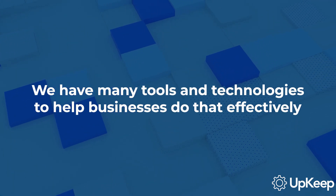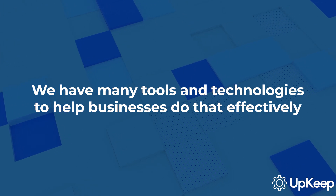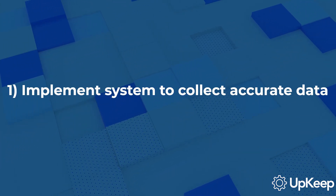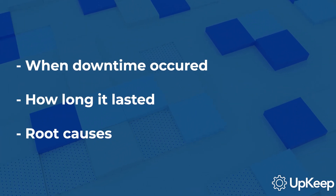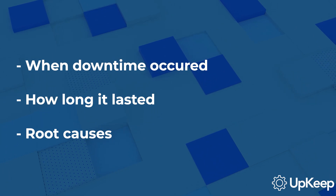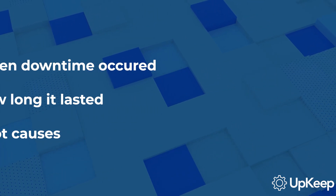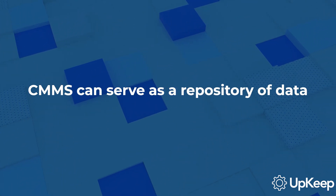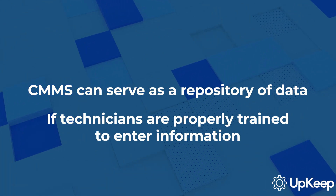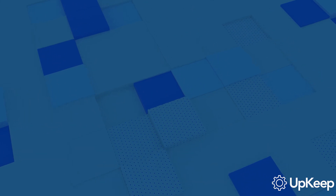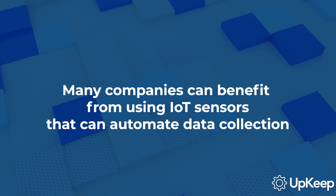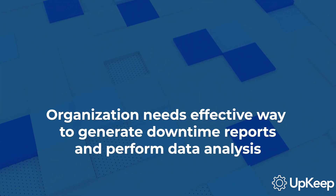Thankfully, we have many different technologies and tools today to help businesses do that effectively. Firstly, manufacturers must implement a system to collect accurate data. Information such as when downtime occurred, how long it lasted, and what the root causes were are critical to quality measurements. Computerized maintenance management systems can serve as a repository of data if technicians are properly trained to enter information. Additionally, many companies can benefit from using Internet of Things sensors that can automate data collection.